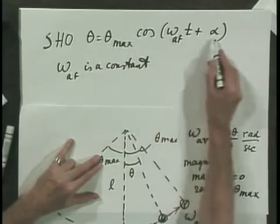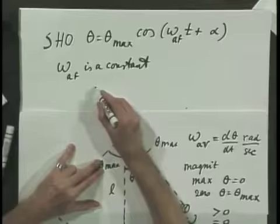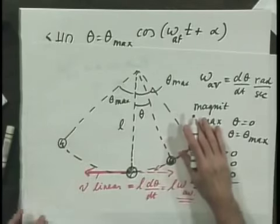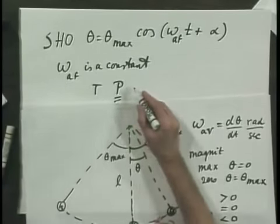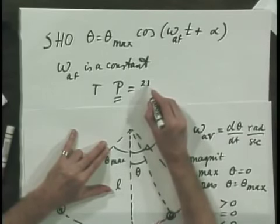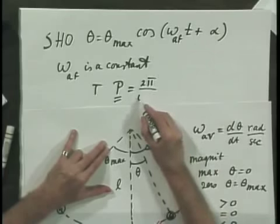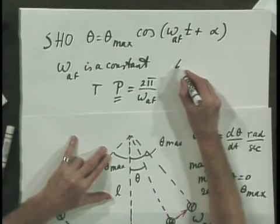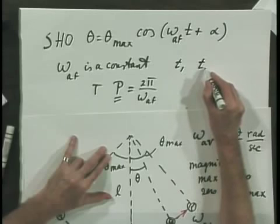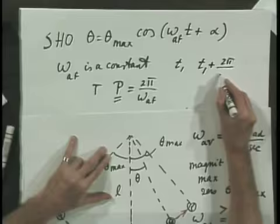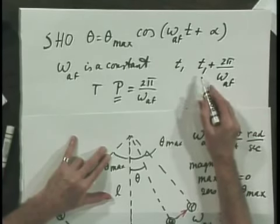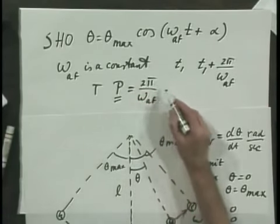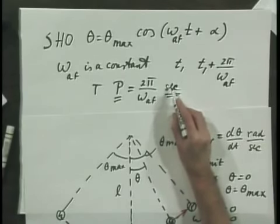The period of one complete oscillation of this simple harmonic oscillator — for which you can write T or P; I prefer P to avoid confusion with tension — equals 2π divided by the angular frequency. If you look at theta at time t₁, and again at time t₁ + 2π/ω, the cosine function will repeat itself verbatim. That is why we call this the period: after so many seconds, the whole thing repeats itself.